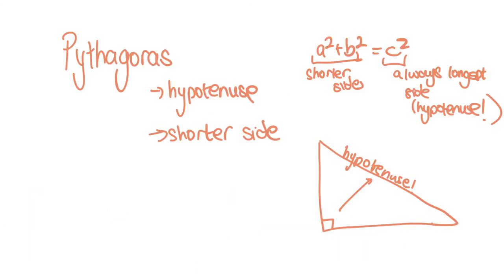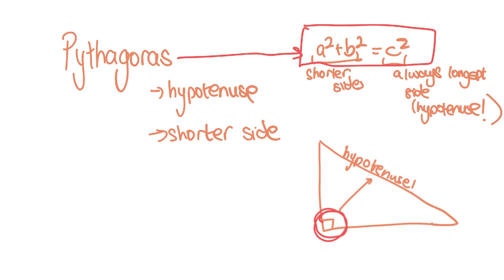The last part of our topic is Pythagoras — a very special rule to find missing sides of a right-angled triangle. A and B are always your shortest sides, and C is always the longest side. To keep this to 15 minutes, I'm going to pause here and put a link in the description to a very good Pythagoras video. Hopefully you've got a better idea of what's coming up in your Year 8 measurement test, covering length, area, volume, and Pythagoras. Do lots of practice questions and you should be all set for your test!